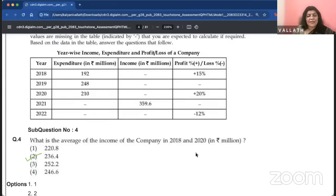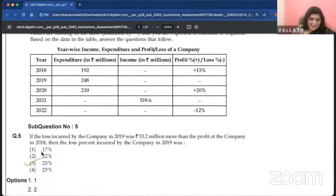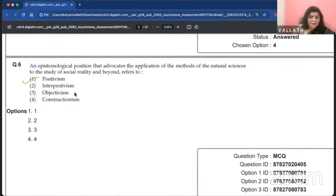This time, paper one will be completely revamped because of this exam. The average of the income of the company is 236. If the loss incurred by the company in 2019 was 33.2 million more than the profit in 2018, then the loss percent is 25%.